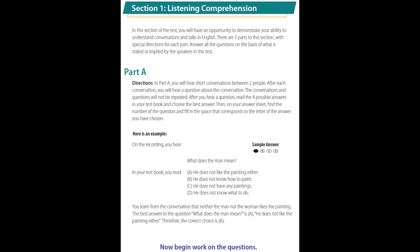Part A. Directions: In Part A, you will hear short conversations between two people. After each conversation, you will hear a question about the conversation. The conversations and questions will not be repeated. After you hear a question, read the four possible answers in your test book and choose the best answer. Then, on your answer sheet, find the number of the question and fill in the space that corresponds to the letter of the answer you have chosen.